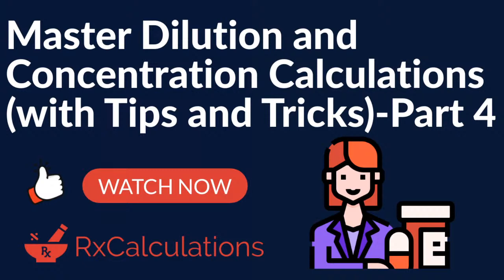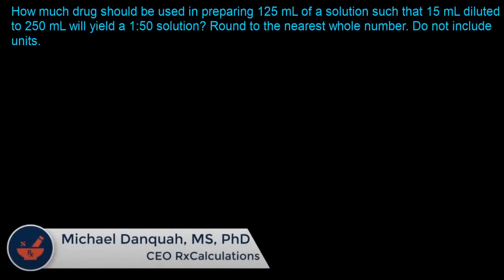The first question asks: how much drug should be used in preparing 125 milliliters of a solution such that 15 milliliters diluted to 250 milliliters will yield a 1:250 solution? Round to the nearest whole number and do not include units.